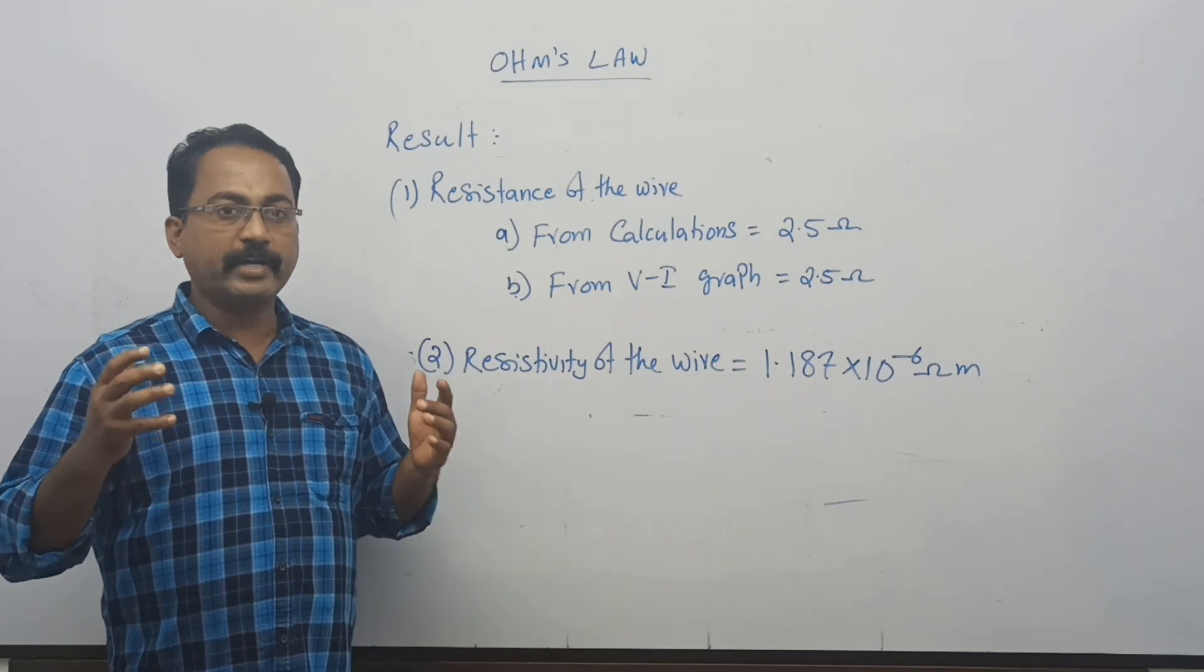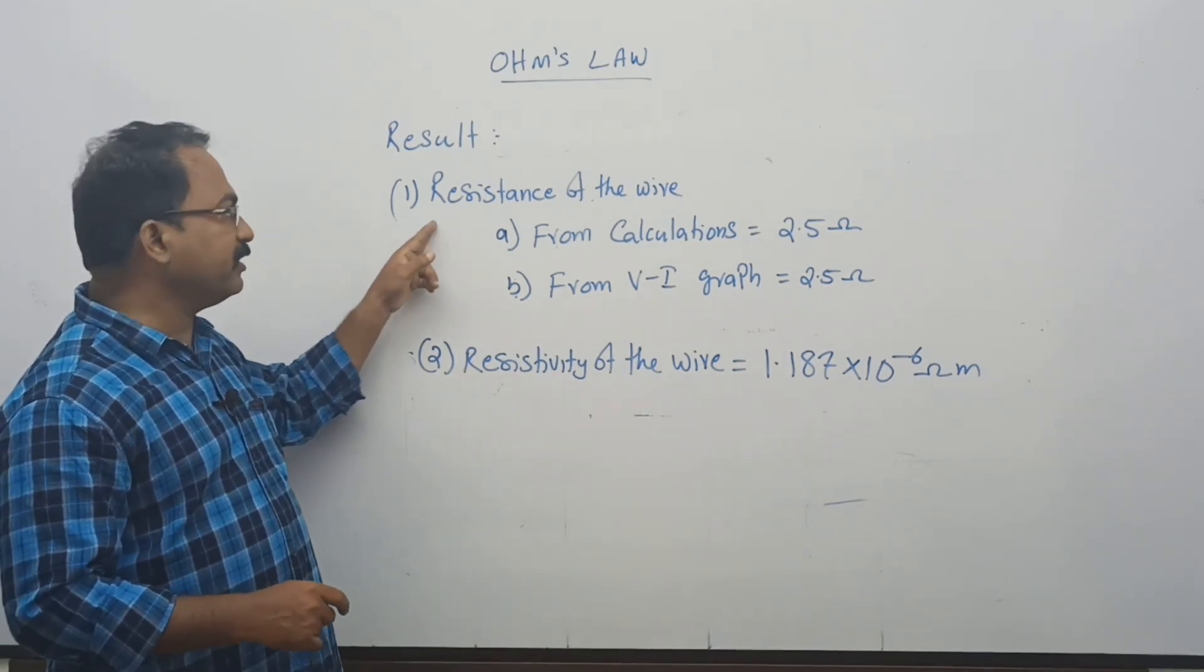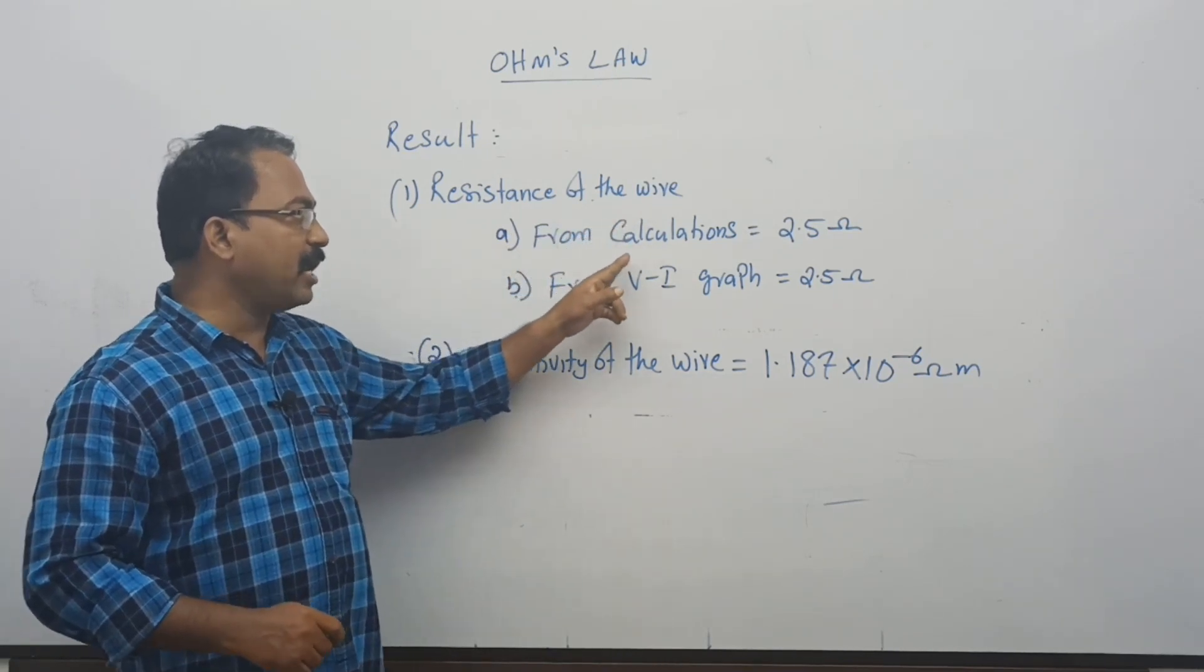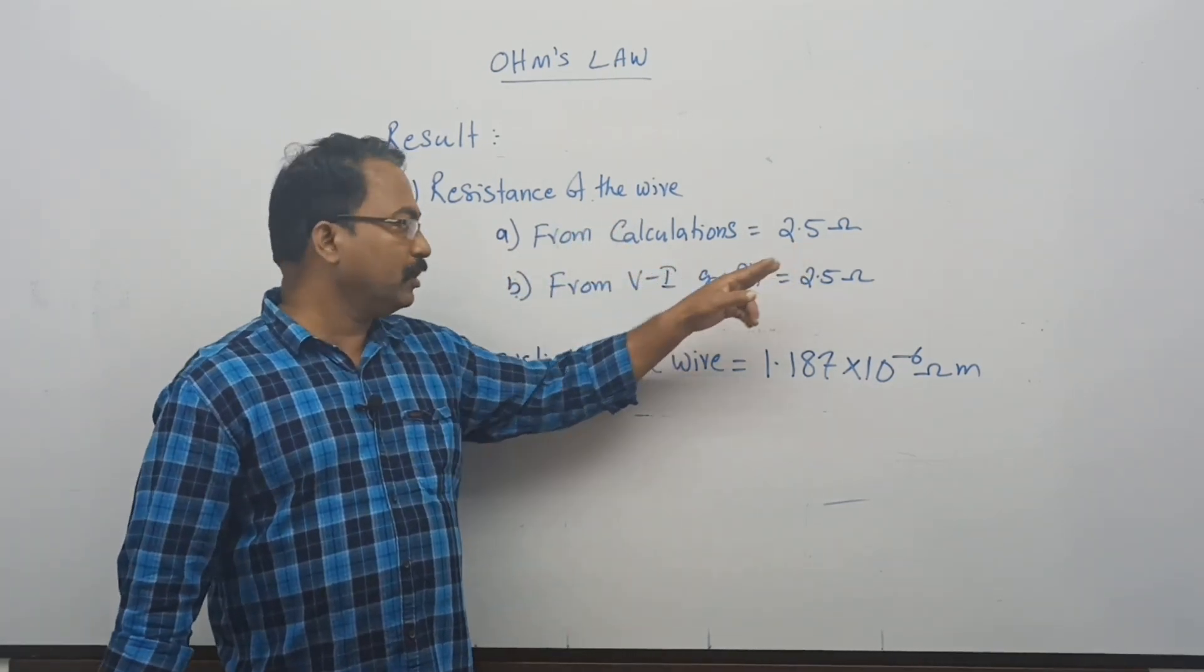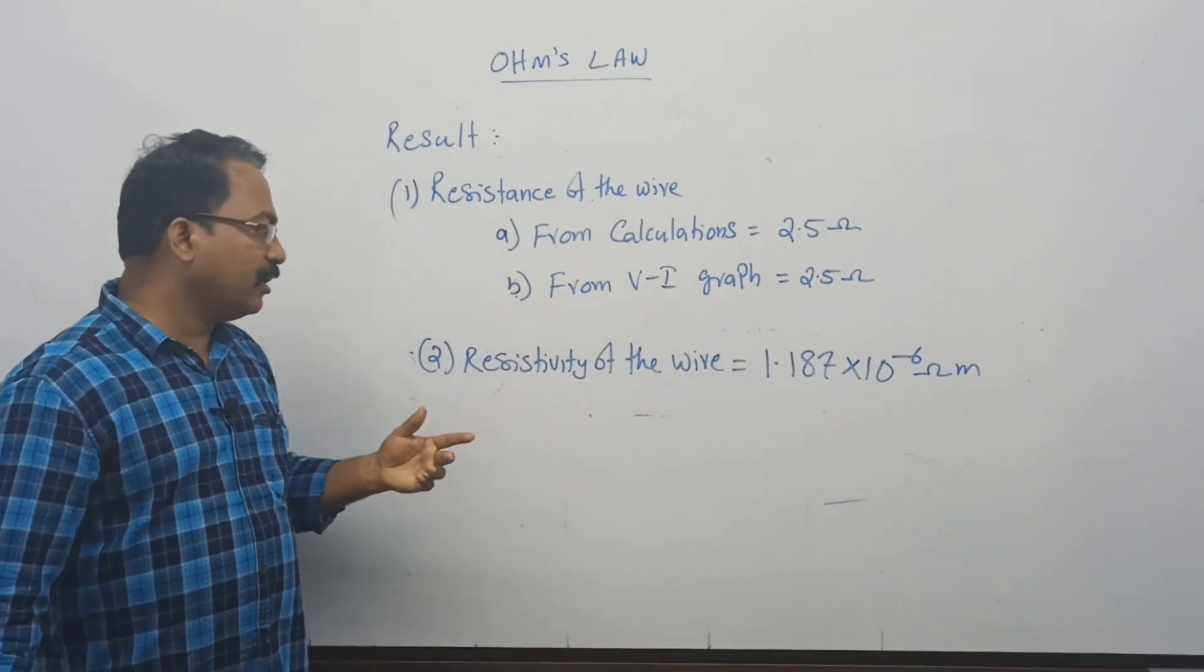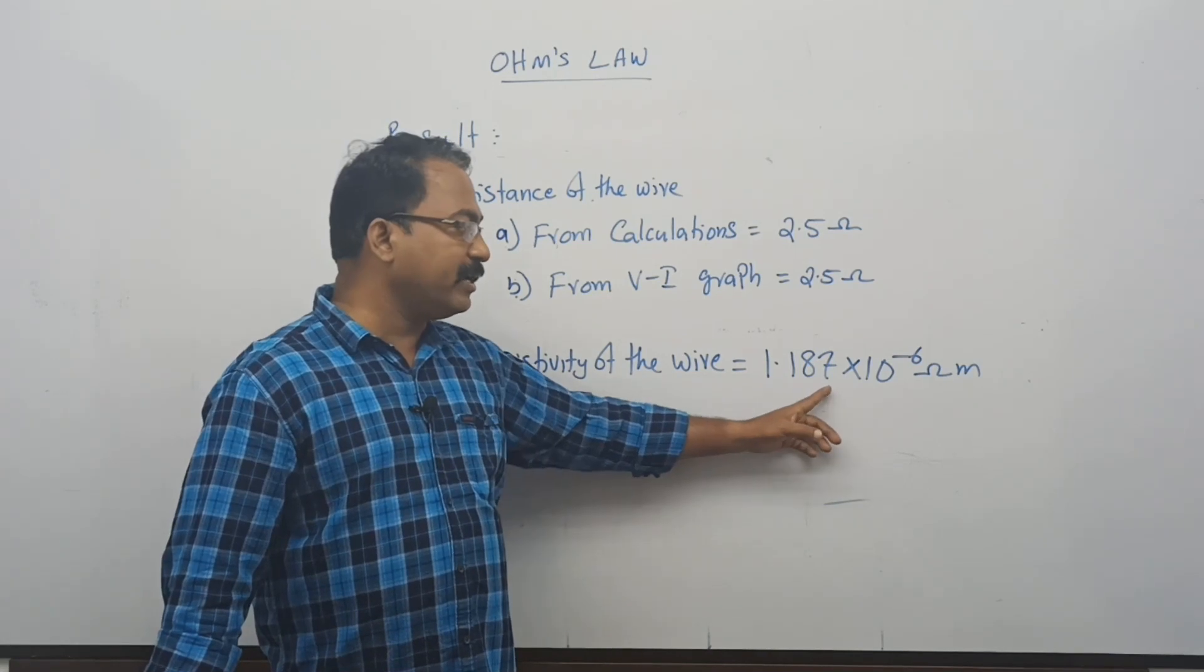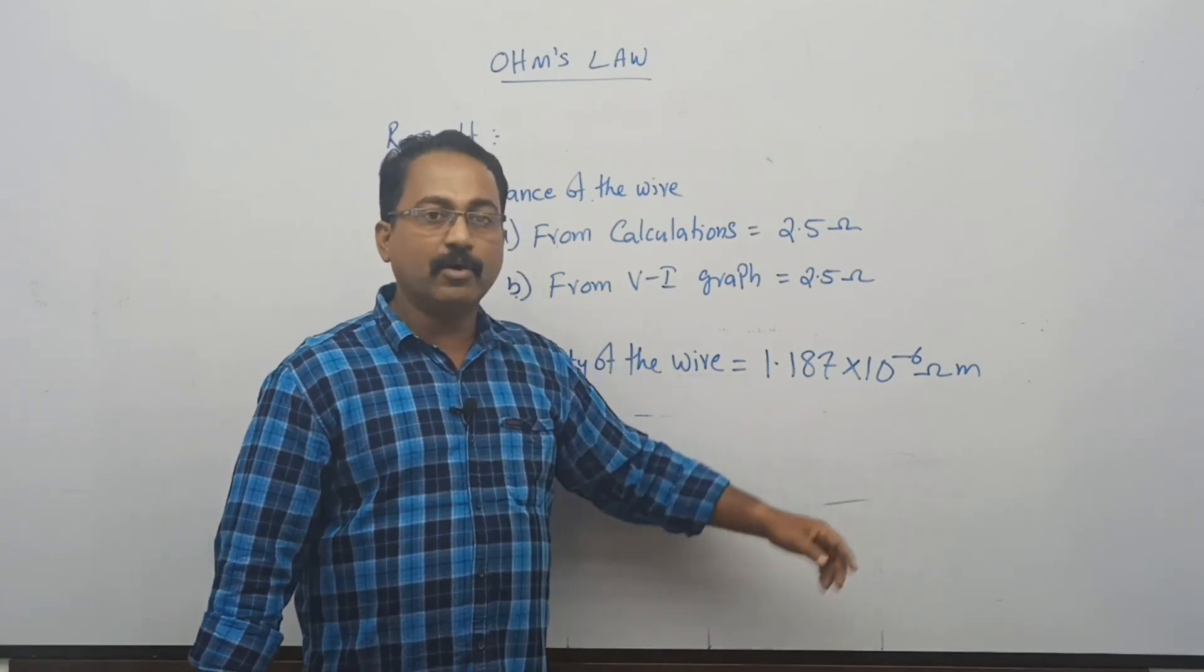Now we have to write the result. We have two results. First result is the resistance of the wire: from calculations it is 2.5 ohm, from V-I graph it is 2.5 ohm. The next result is the resistivity of the wire = 1.187 × 10^-6 ohm meter.